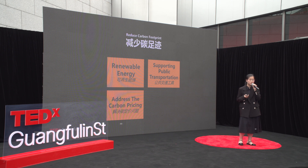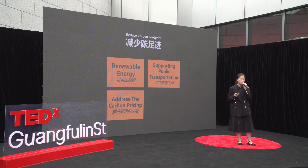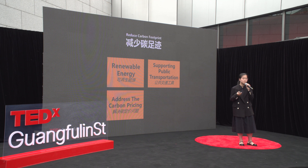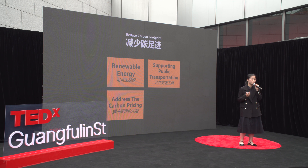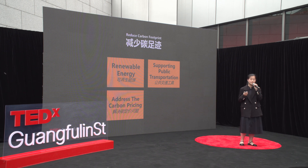We can also reduce our carbon footprint by supporting public transportation. In 2019, transportation accounted for 29% of greenhouse gas emissions in the United States. By using public transportation, carpooling, or walking and biking, we can reduce carbon emissions and improve air quality. In addition to these solutions, we must also address the issue of carbon pricing. Carbon pricing is a market-based mechanism using carbon taxes and cap-and-trade systems, which creates an economic incentive to reduce carbon footprints and invest in renewable energy. Several countries, including Canada, China, and the European Union, have already implemented carbon pricing schemes, and more countries are expected to follow suit.